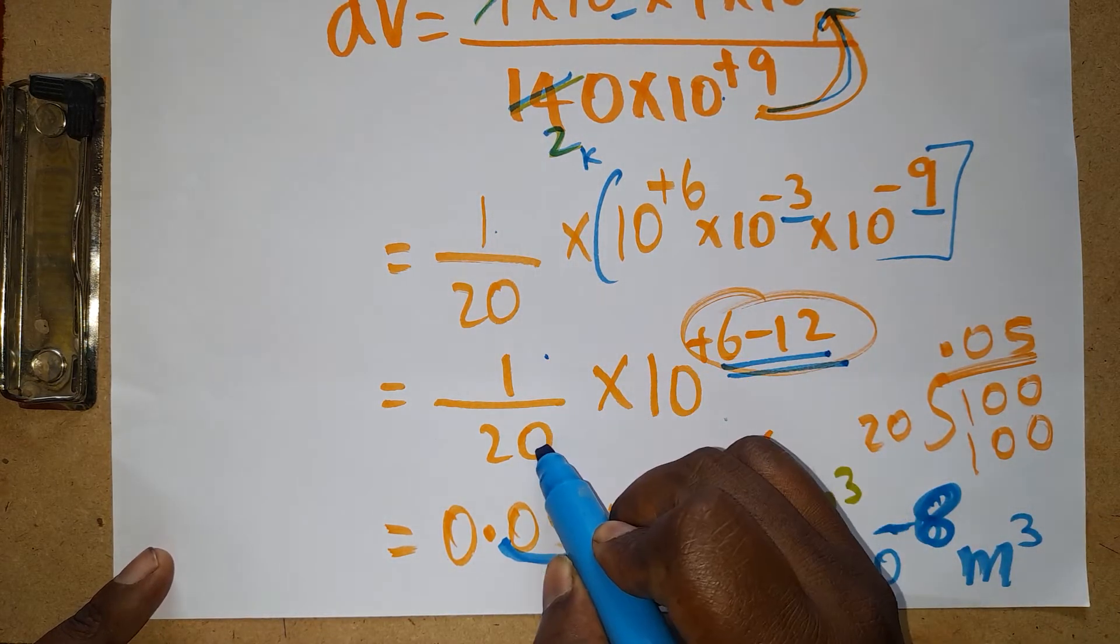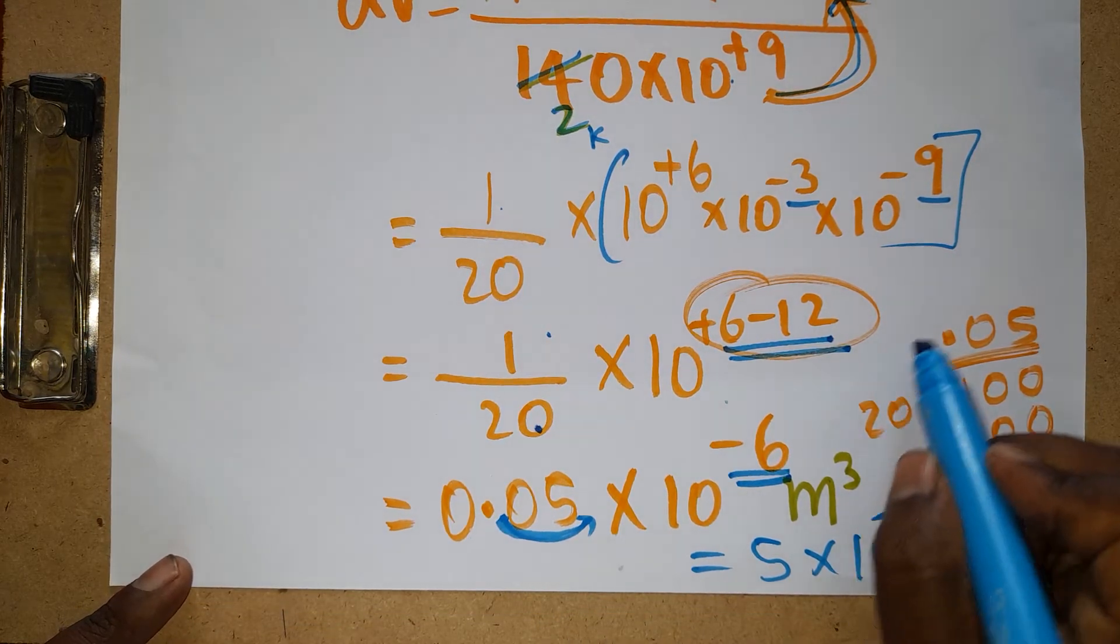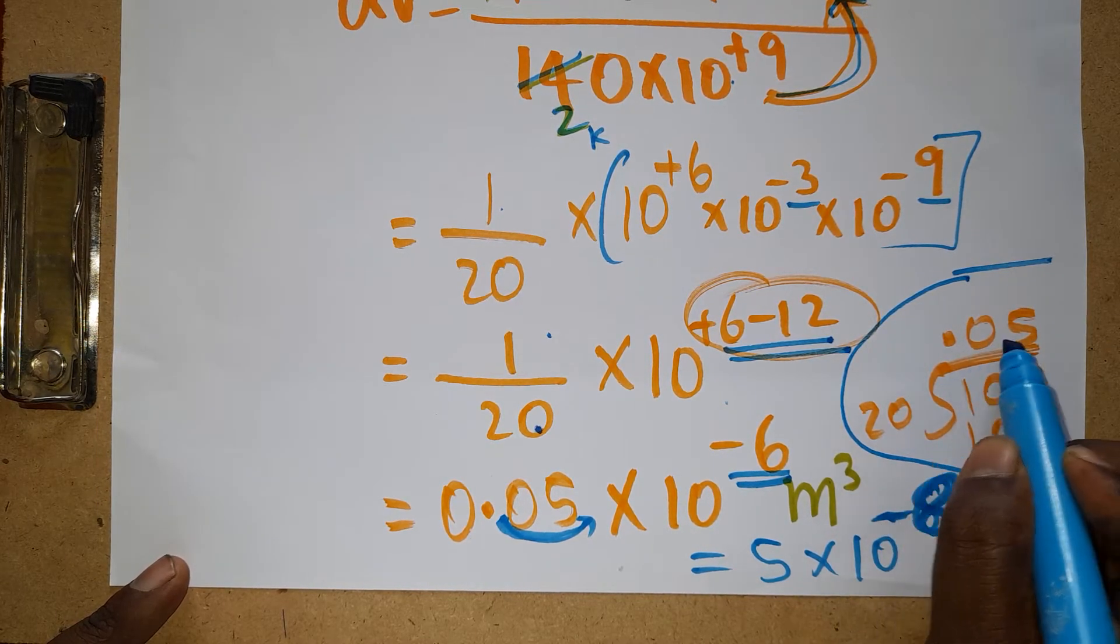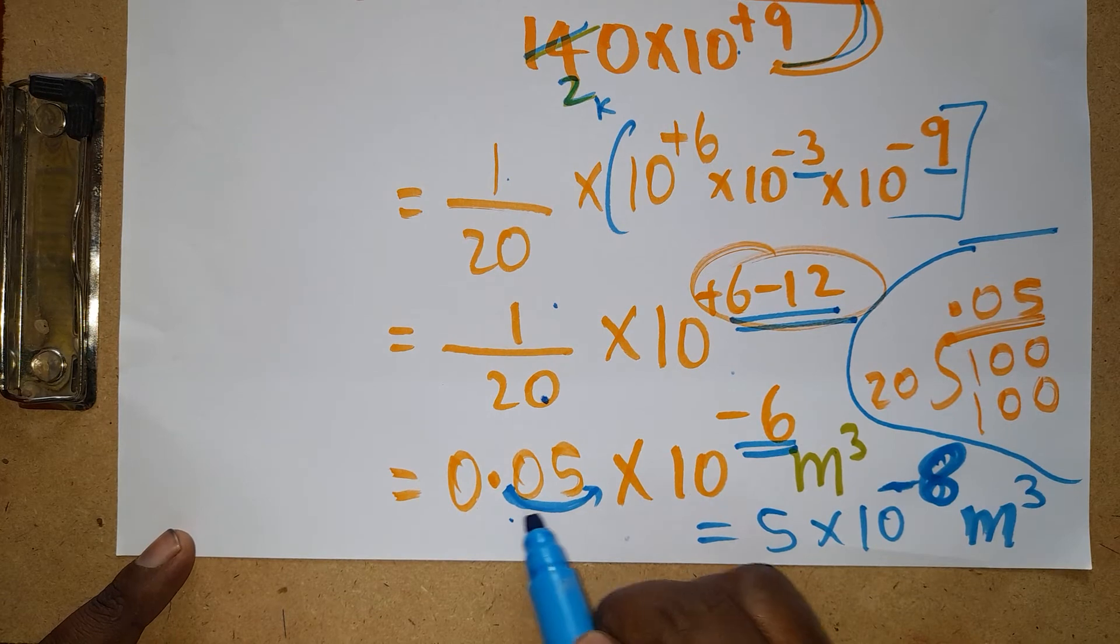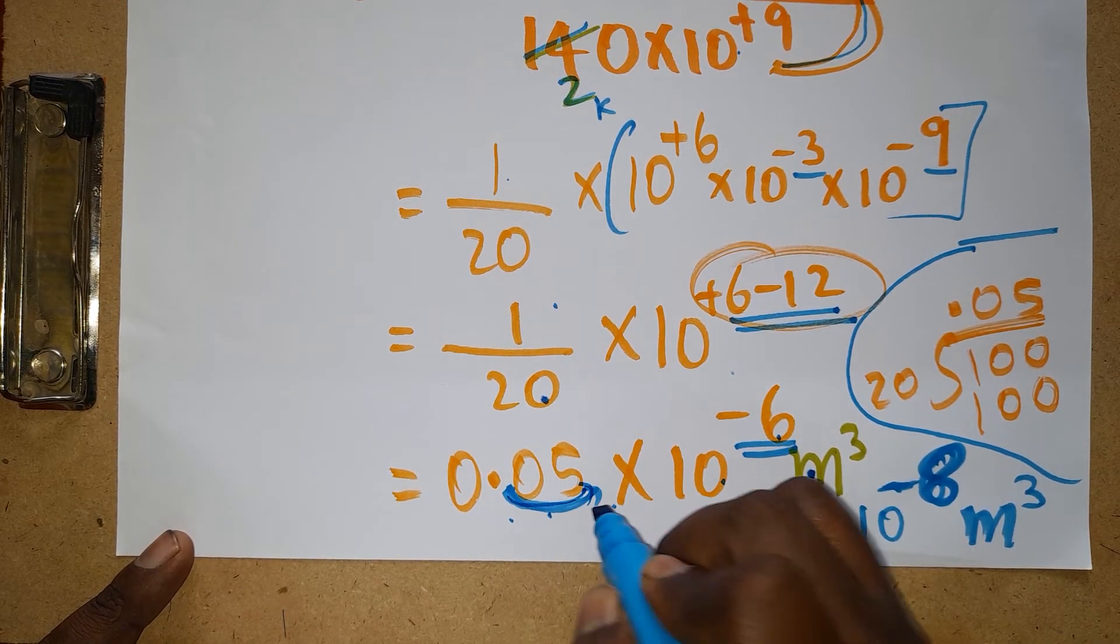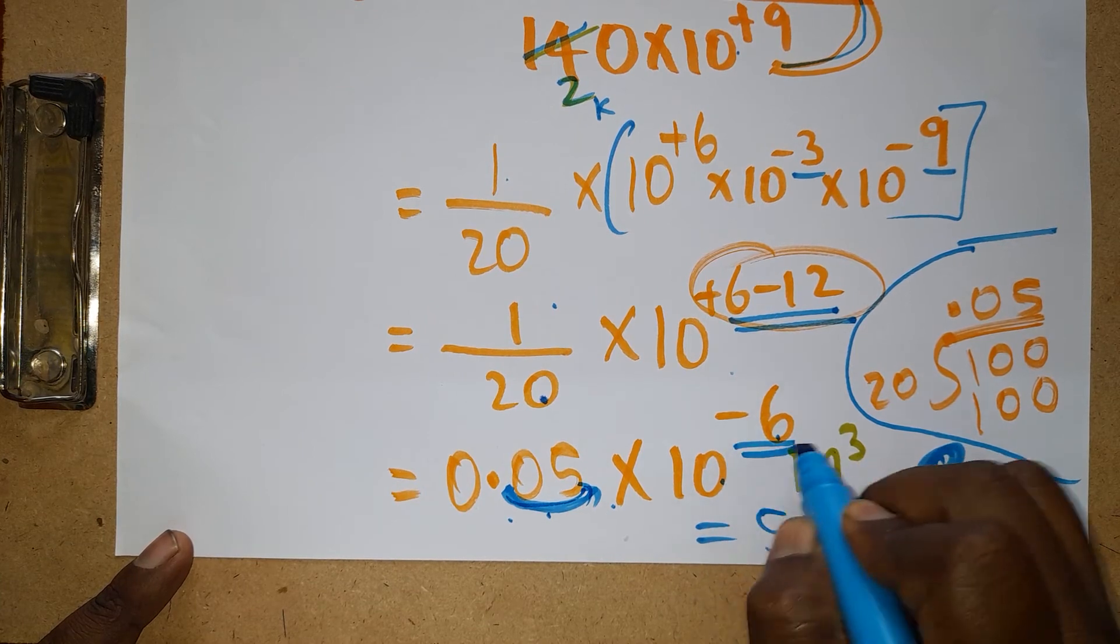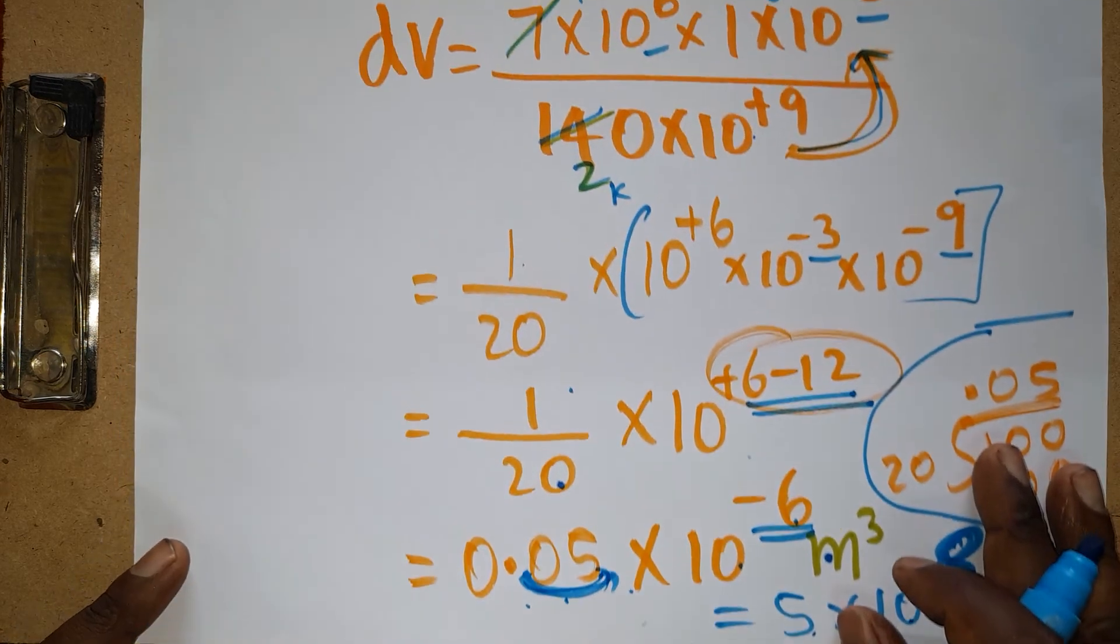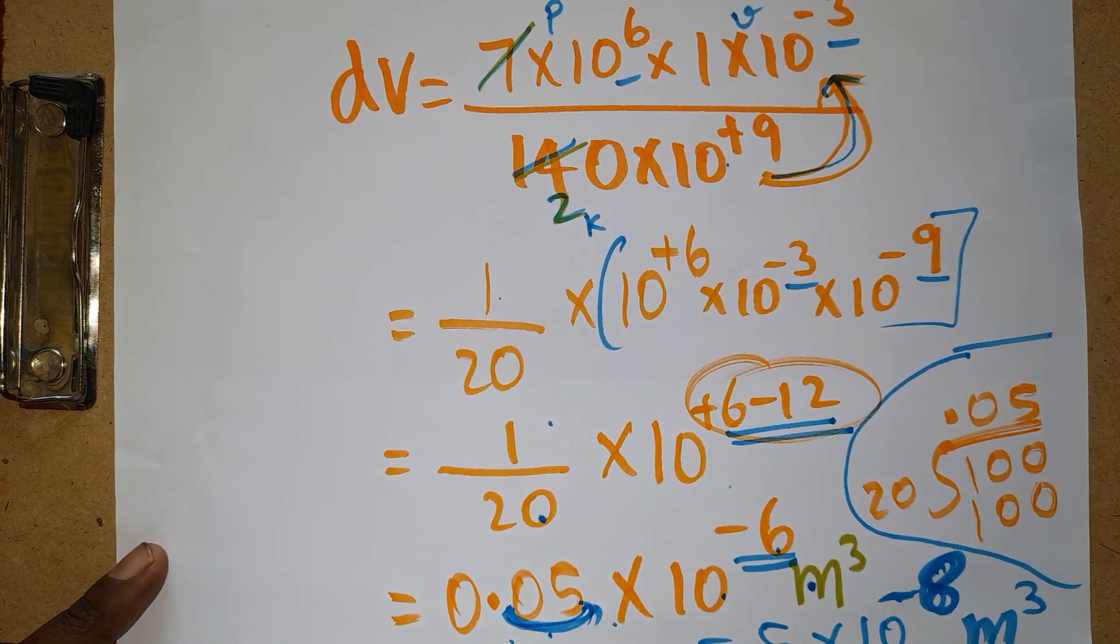1 divided by 20, approximately 0.05. So 0.05 × 10^-6 meter cube. If you move 2 decimal places, you can raise the negative power by 2. Finally, 5 × 10^-8 meter cube as the final answer. Thank you for watching my channel. If you like my channel, please subscribe.